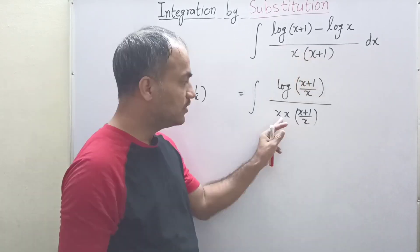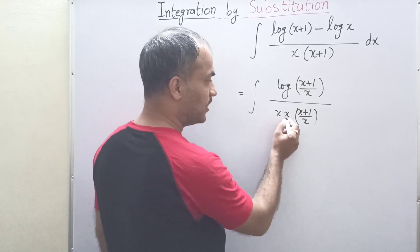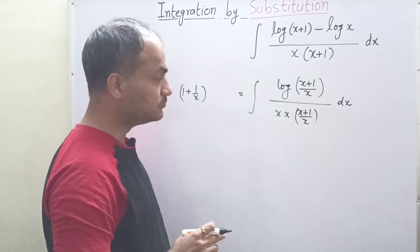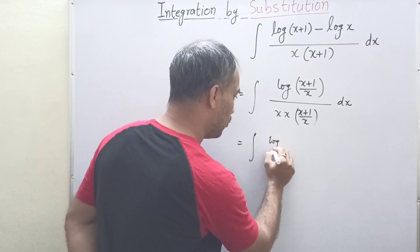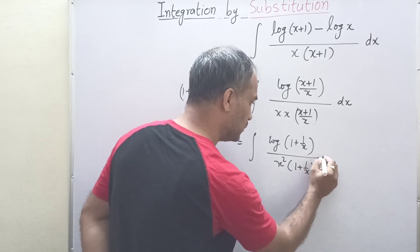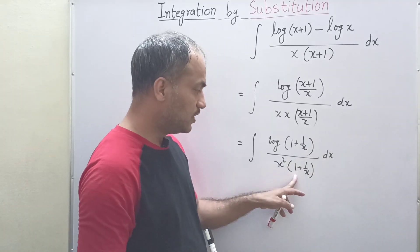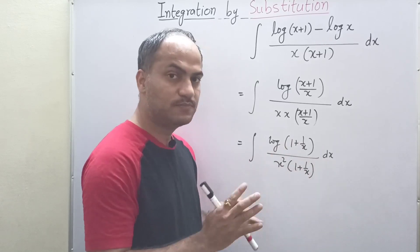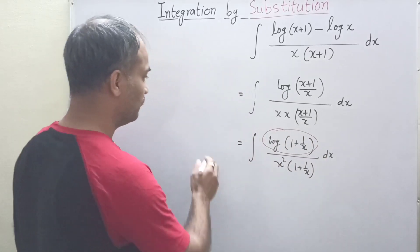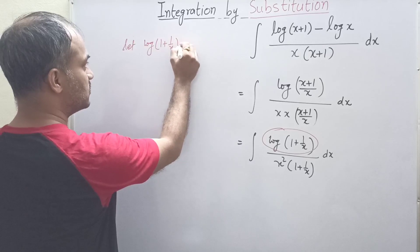If we take x common from a certain term, we can divide by x and multiply by x — the x already present becomes x squared. So the expression we need, (1 + 1/x), now appears in the integrand. With this, we can see that log(1 + 1/x) divided by x² (1 + 1/x) is the structure we have. We can assume t equals log(1 + 1/x) for substitution.